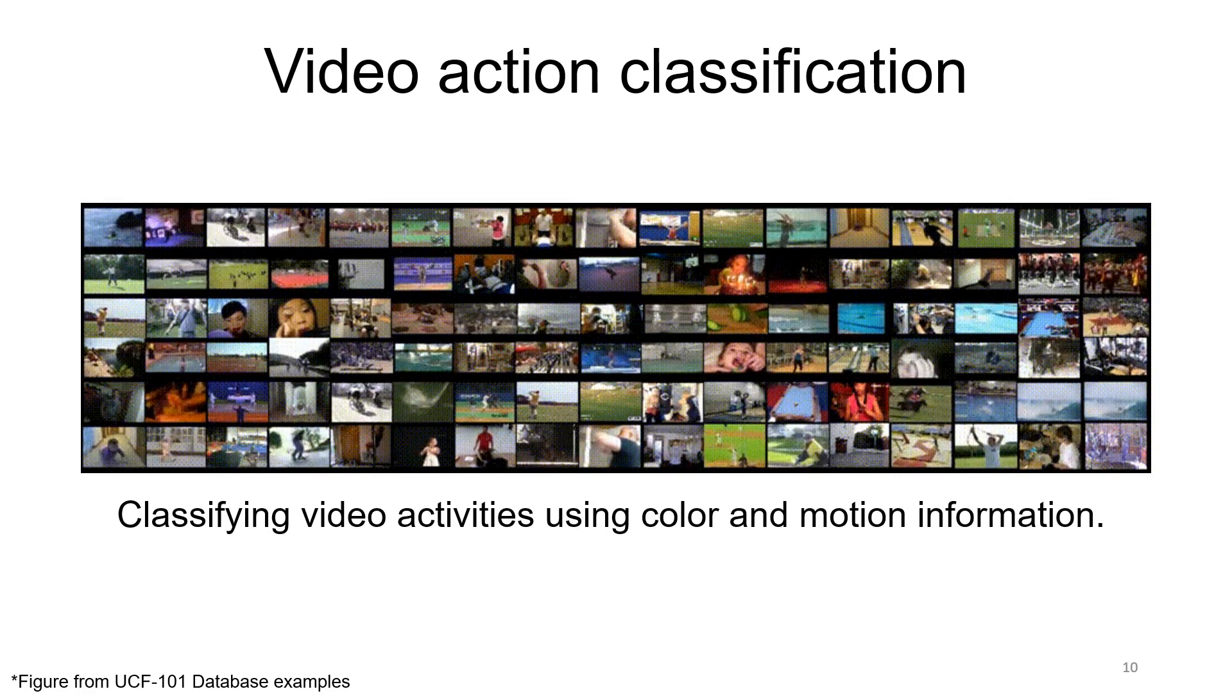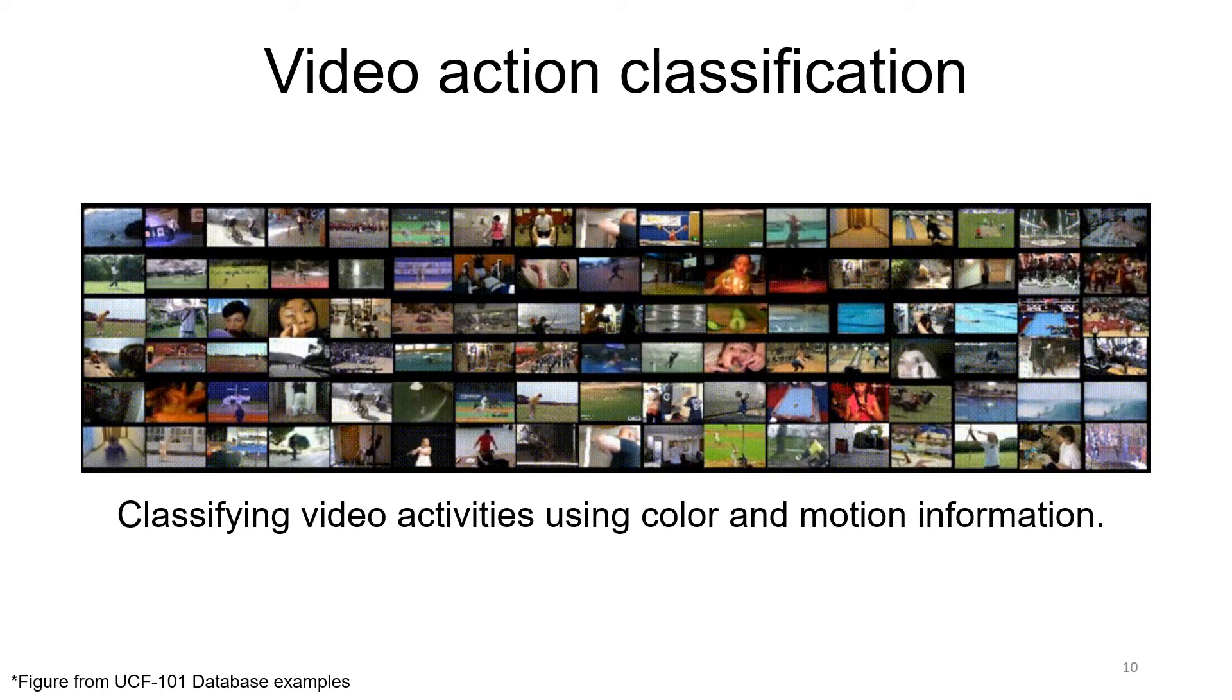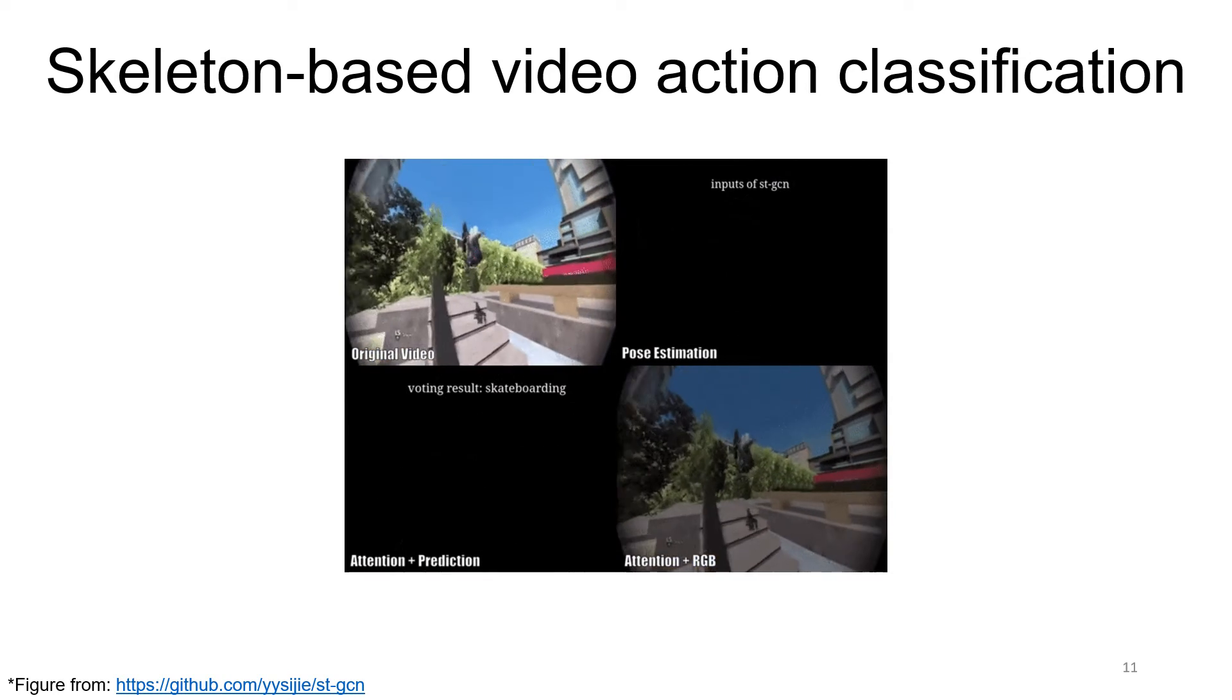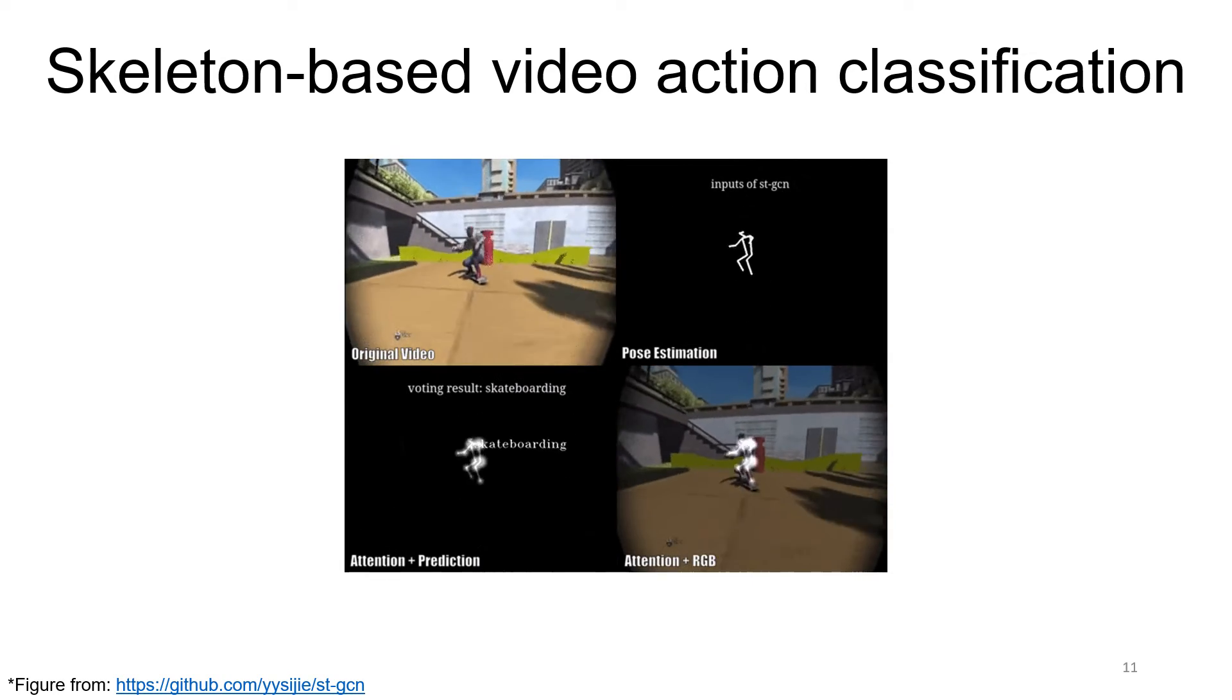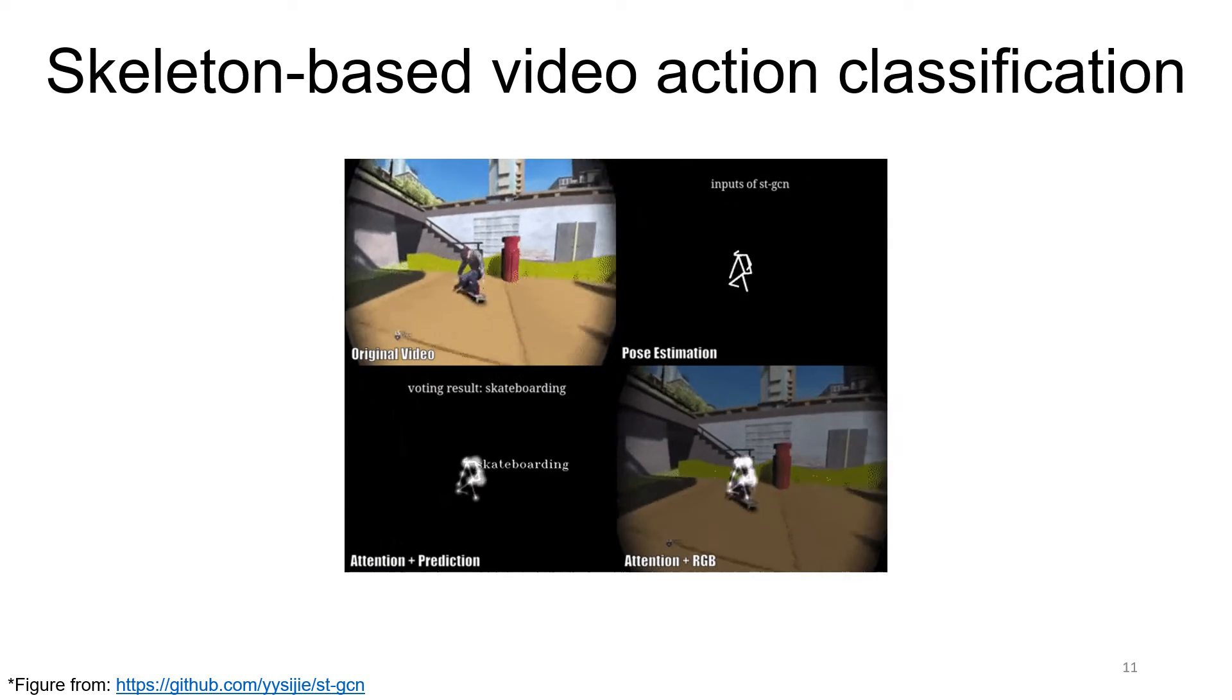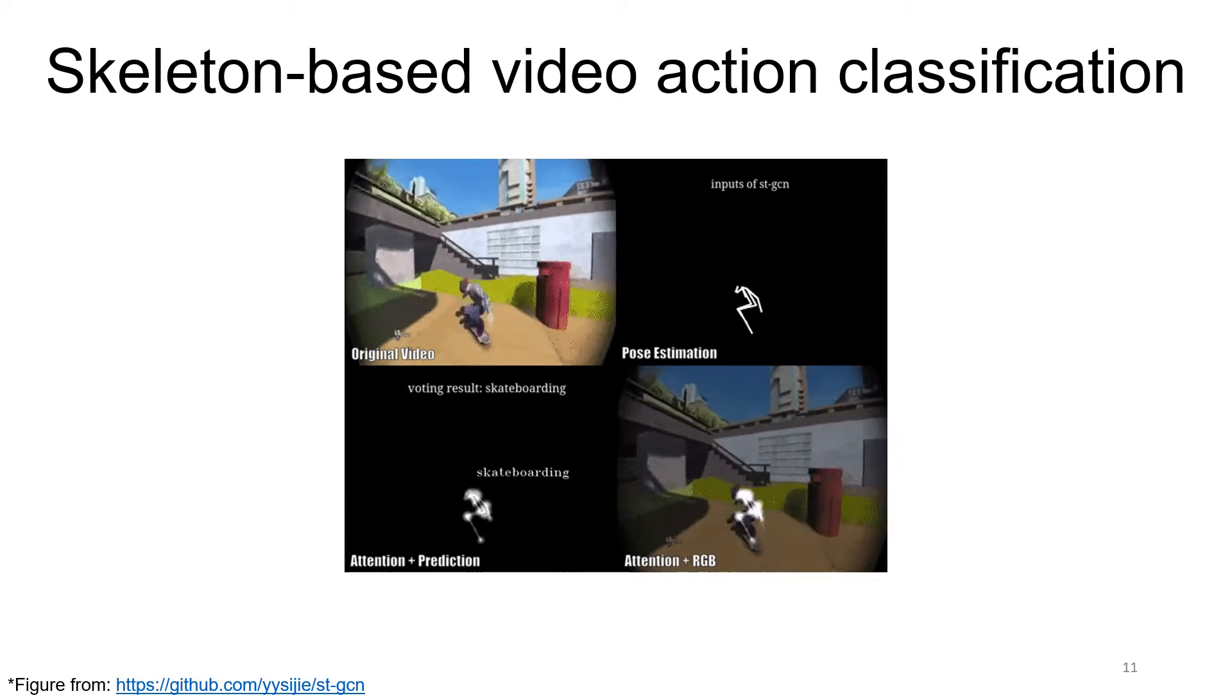Action recognition is a task of assigning an action label to a video clip. One of the approaches to handle action recognition is skeleton-based, where instead of using the entire RGB information, we extract a skeleton representation in time to predict the action in the video.